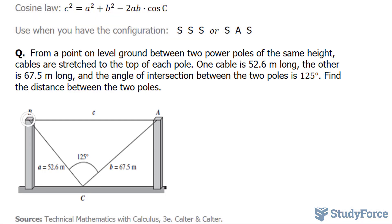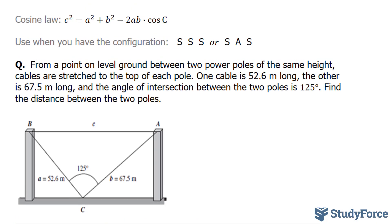Our goal is to find the distance from B to A, and it's labeled C. To answer this question effectively, you'll need to use the cosine law. To use the cosine law, we'll be following this formula. And the cosine law applies especially when you have these two configurations.